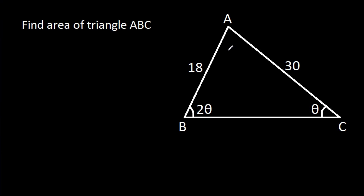In this video, we have been given that AB is 18, AC is 30, angle ABC is 2 theta, angle ACB is theta, and we have to find the area of triangle ABC.